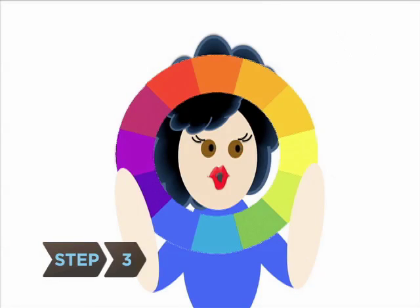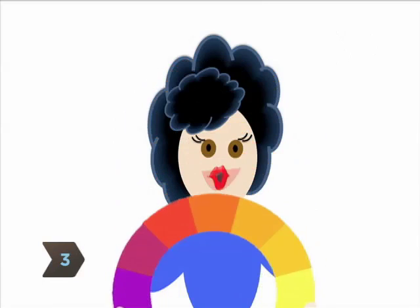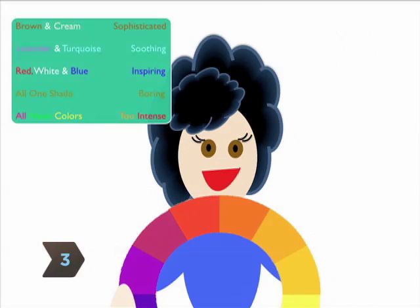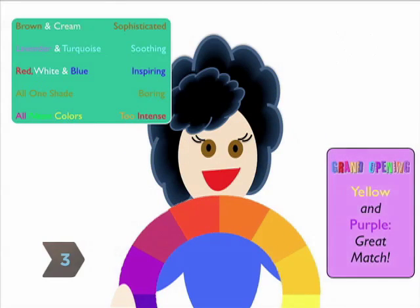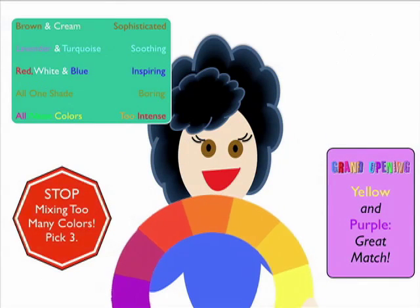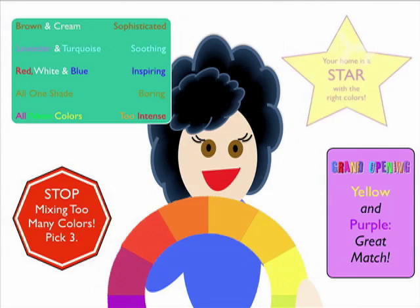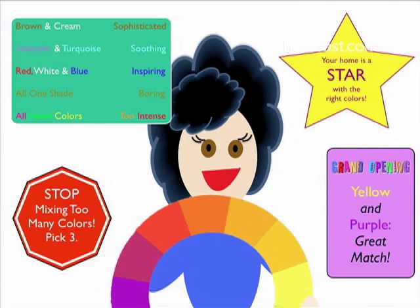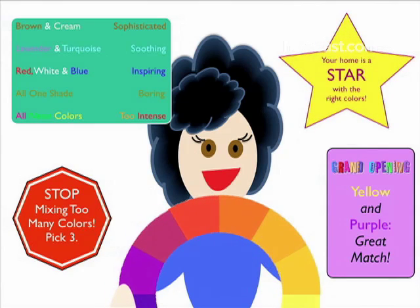Step 3. Bring the color wheel with you when you shop. The visual representation of the color wheel will help you understand why different color combinations clash while others harmonize.